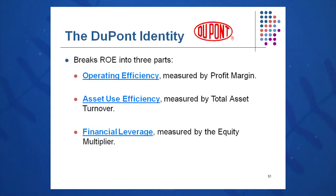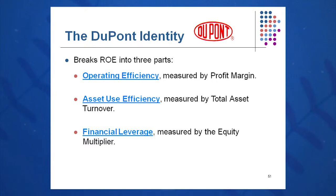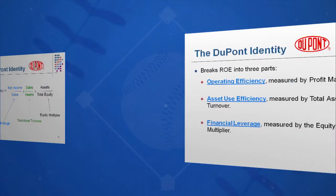Some of the folks at DuPont broke this equation into parts and looked at how to get return on equity up. They broke it into three parts: number one, operating efficiency as measured by profit margin; asset use efficiency as measured by the asset turnover; and financial leverage measured by the equity multiplier.